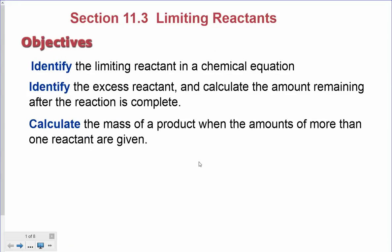We're talking about limiting reactants today. This is section 11.3 out of your book. The three main objectives are: to identify the limiting reactant in a chemical equation, to identify the excess reactant and calculate the amount remaining after the reaction is complete, and to calculate the mass of the product when the amounts of more than one reactant are given.